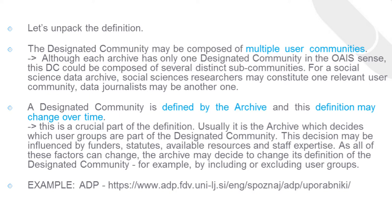A designated community is defined by the archive and this definition may change over time — this is a crucial part of the definition. Usually it is the archive which decides which user groups are part of the designated community. This decision may be influenced by funders, parent organizations, statutes or legal regulations, and available resources and staff expertise. As all of these factors can change, the archive may decide to change its definition of the designated community, for example by including or excluding user groups. For an example, check out the webpage of the Slovenian social science data archives to see how they define their designated community.